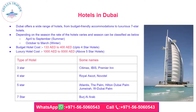Dubai offers a wide range of hotels, from budget-friendly accommodations to luxurious seven-star hotels. Hotel rates vary by season: April to September is summer season, and October to March is winter season. Budget hotels cost around 133 to 400 dirhams per night for up to four-star hotels, while luxury hotels cost 1,000 to 9,300 dirhams per night for five-star and above.